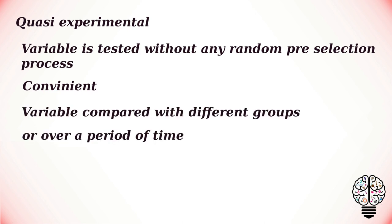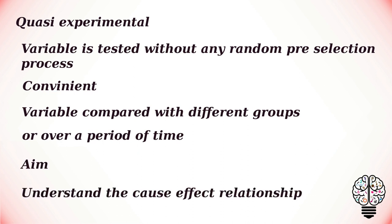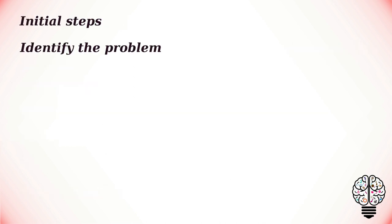After this selection, the experiment proceeds in a very similar way to any other experiment, with a variable being compared between different groups or over a period of time. The aim of the quasi-experiment is the same as that of a true experiment — to understand a cause-effect relationship.